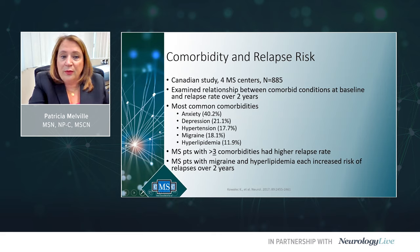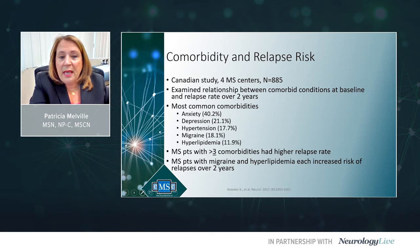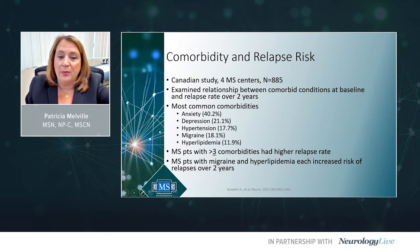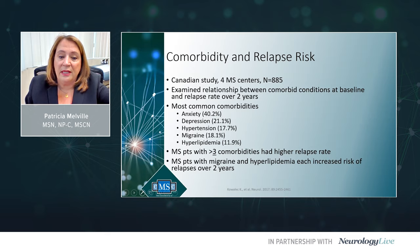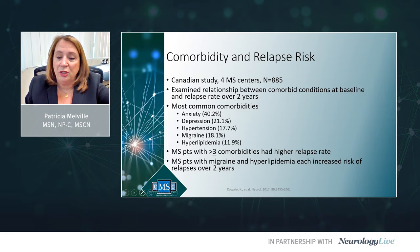Comorbidity can also affect relapse risk. A Canadian study across four MS centers with 885 patients examined comorbid conditions at baseline and relapse rate over two years. The most common comorbidities were anxiety, depression, hypertension, migraine, and hyperlipidemia. MS patients with three or more comorbidities had a higher relapse rate. MS patients with migraine and hyperlipidemia each had an increased risk of relapses over two years.